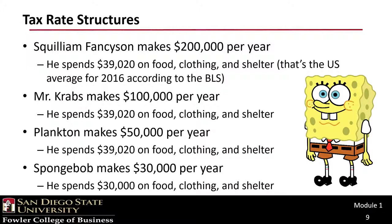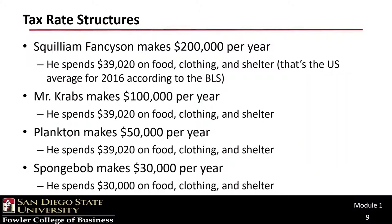Lastly, at the bottom of our list, comes poor old SpongeBob at only $30,000 a year. Since SpongeBob doesn't even make $39,000, he can only spend $30,000 — basically everything he makes — on food, clothing, and shelter. Of course, consumption of these basic necessities is not perfectly inelastic with respect to income. Squilliam probably lives in a bigger, nicer home and perhaps eats caviar and champagne every day. But the point is that at the basic necessity level, we would all spend the same.